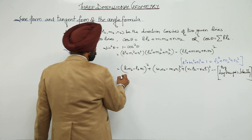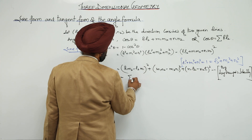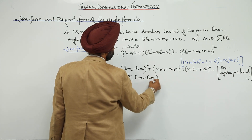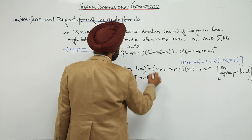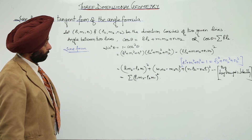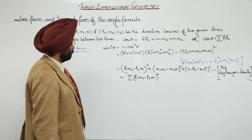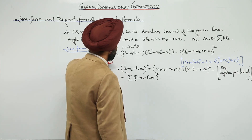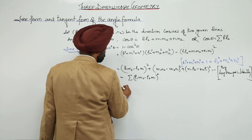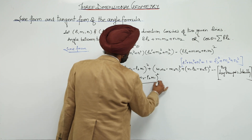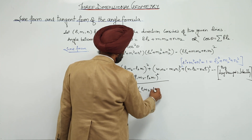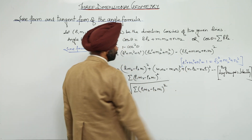So sin θ = ±√(Σ(L1M2 − L2M1)²). That is the sin form of the angle between two lines.